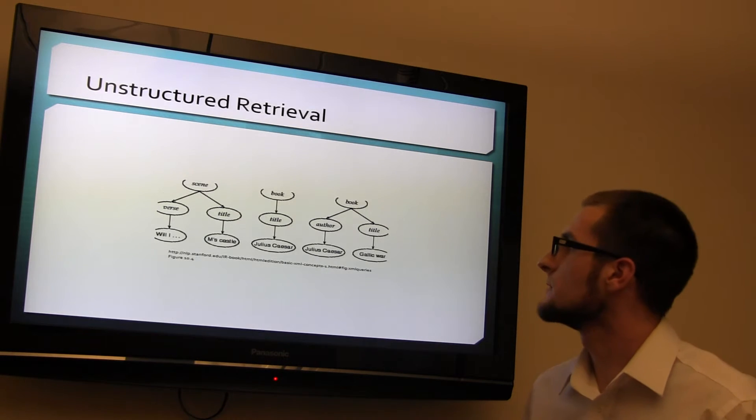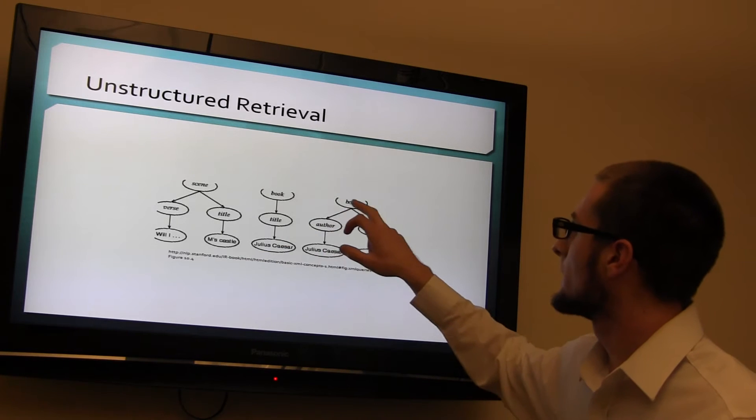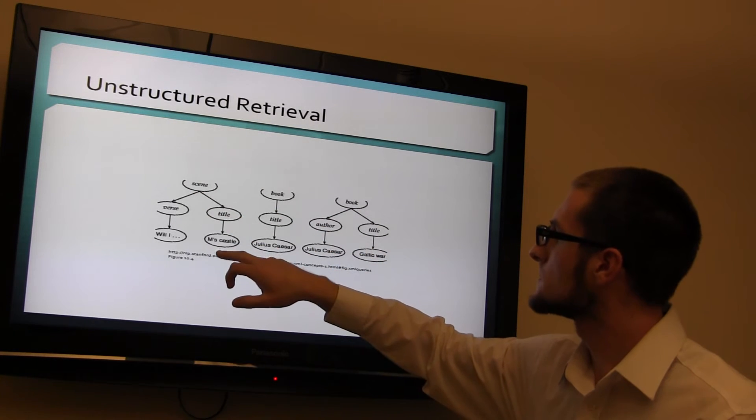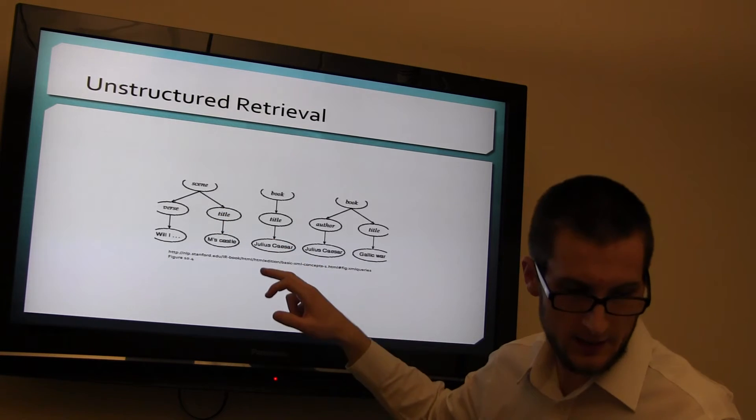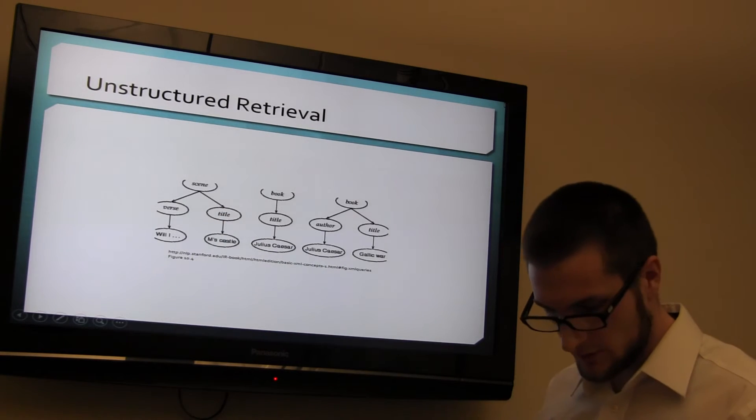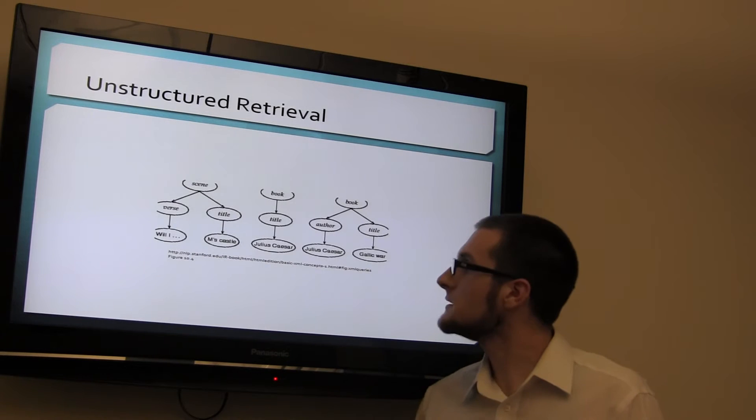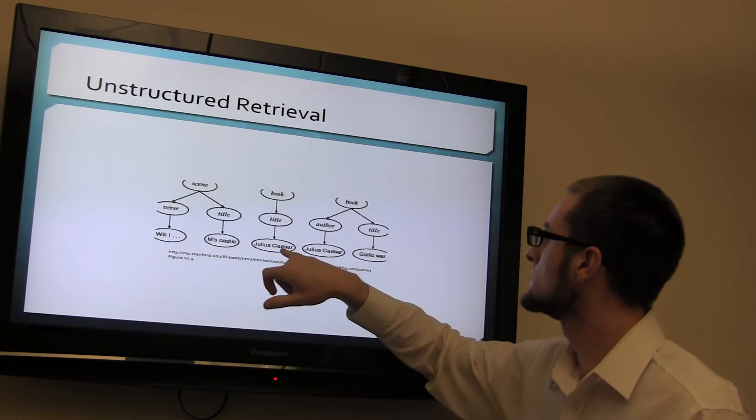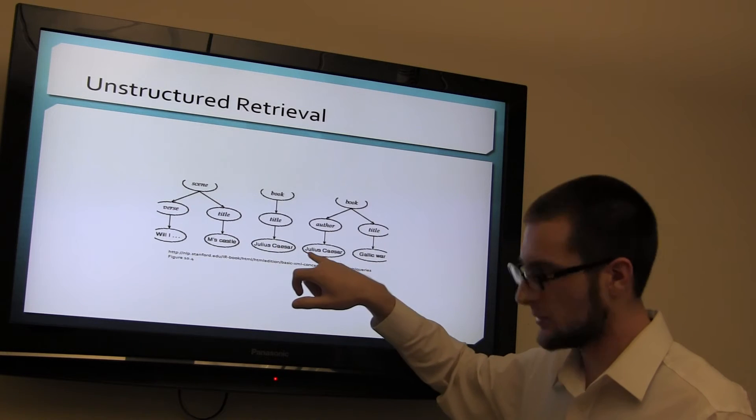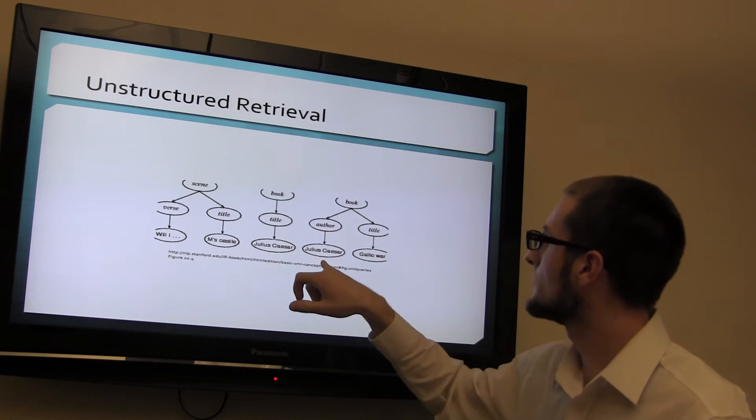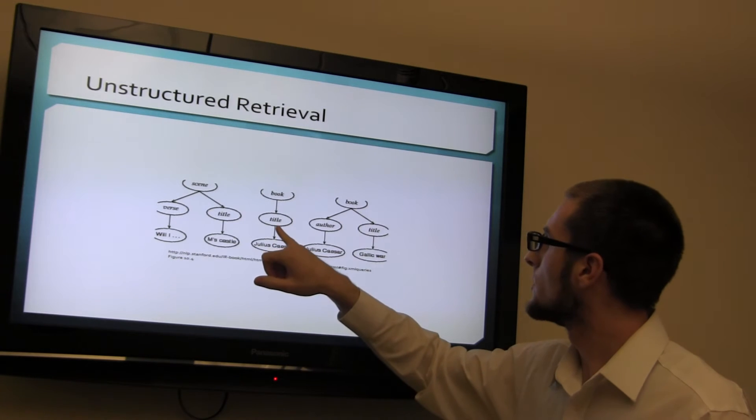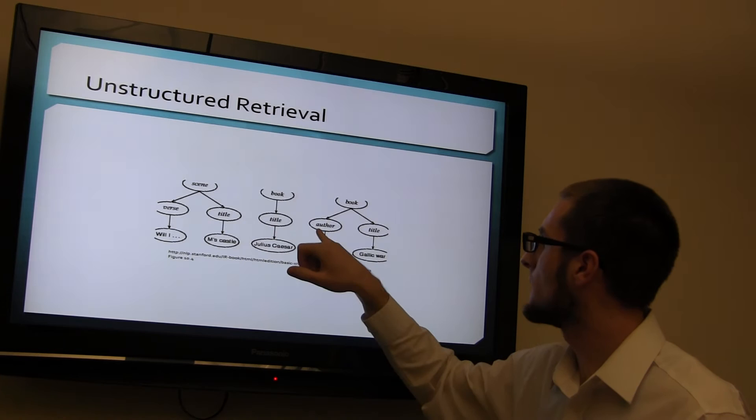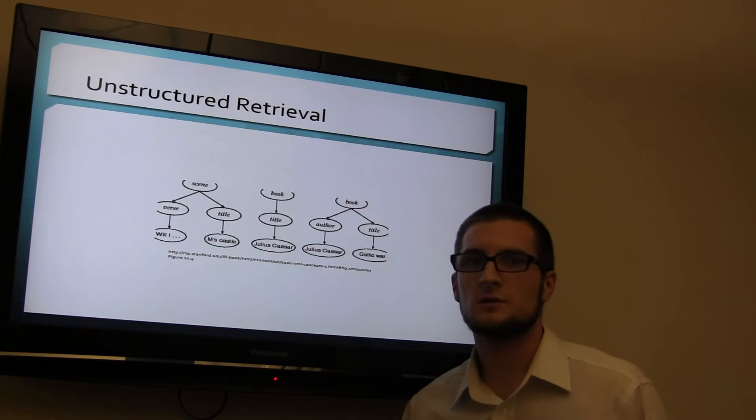Unstructured retrieval. You can see here how again, we have a hierarchy and the root element and the elements, all broken down. And for unstructured retrieval, you want to make sure that in this case, the title and the author both are Julius Caesar. So you have to make sure that they are split up, that way they don't get confused and you know exactly what you're talking about. If you search for the term Julius Caesar, it's going to give you title and author, but you need to make sure they're split so there's a difference.